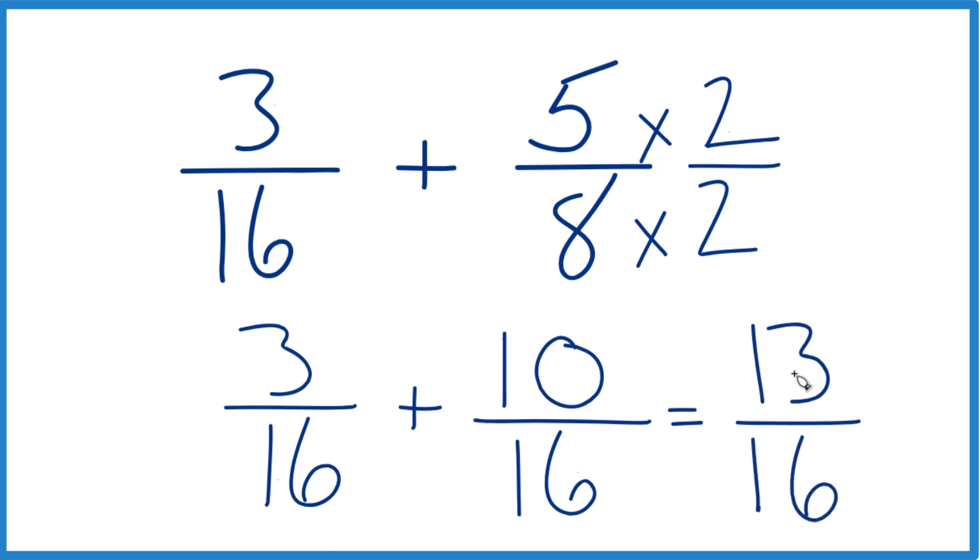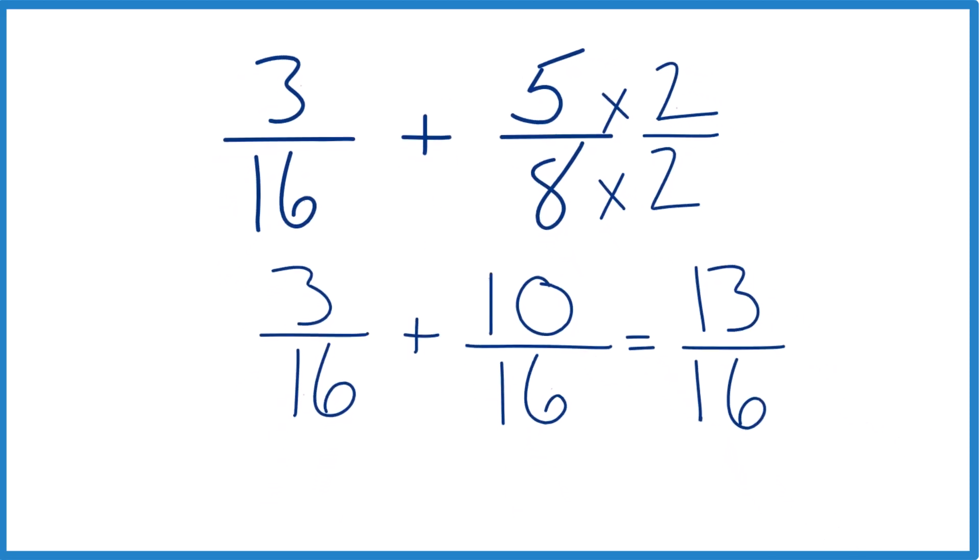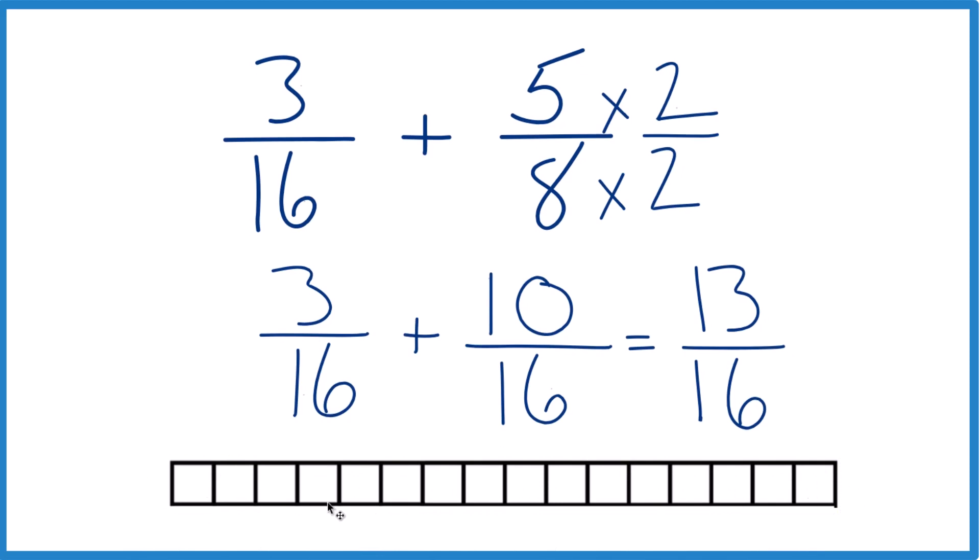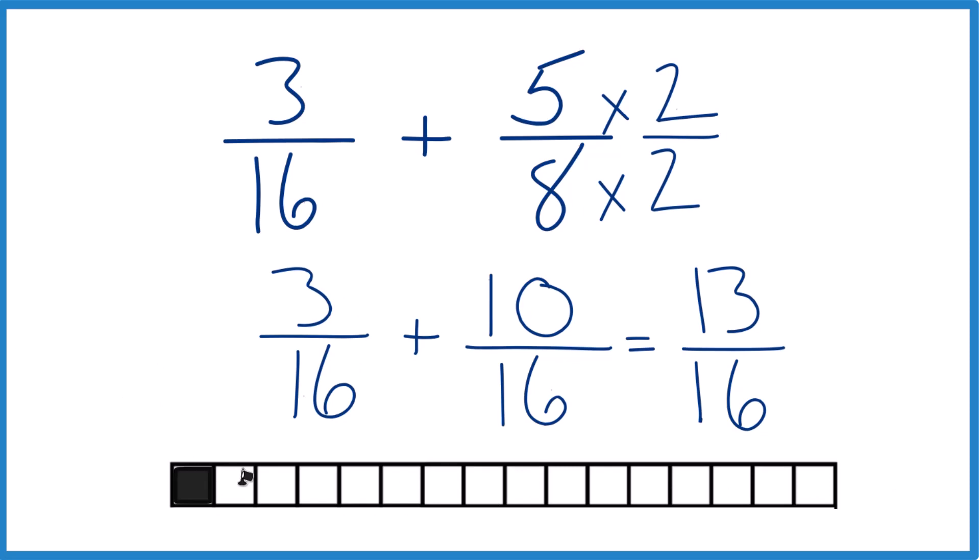So 3 sixteenths plus 5 eighths, that's 13 sixteenths. And a really good way to think about this is, if you had a measurement here, you had 16 pieces, equal pieces here, 3 sixteenths, that would be 3 of these blocks: 1, 2, 3.